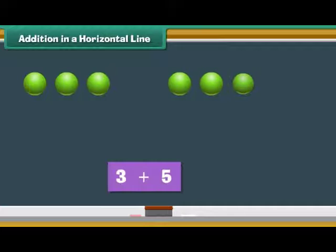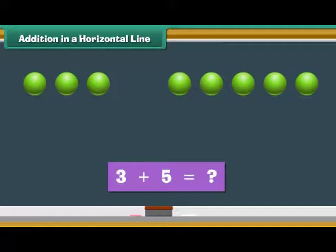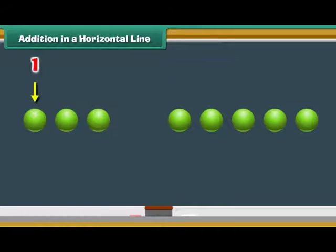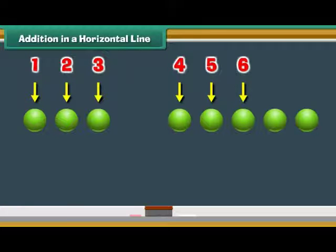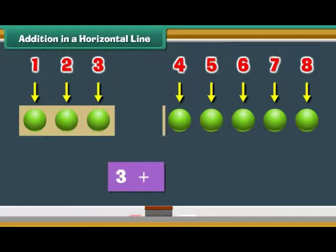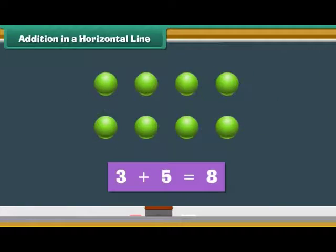What is three plus five? Count the dots: one, two, three, four, five, six, seven, eight. Three plus five is eight.